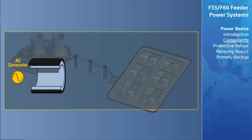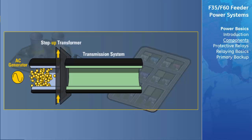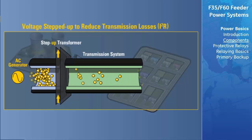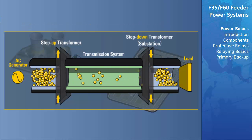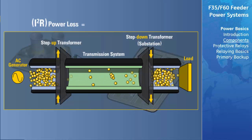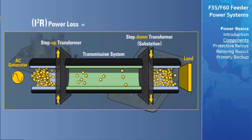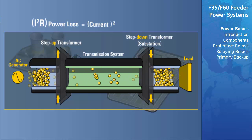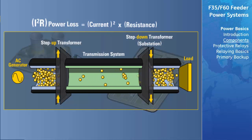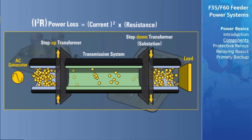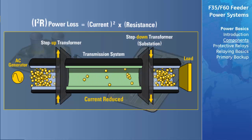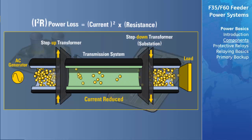Once generated, the voltage is fed to step-up transformers for transmission to reduce the I-squared R losses, and then at the substation it is stepped down for distribution. Given that power loss equals current squared times the resistance of the transmission line, the step-up transformer increases the voltage level, thereby reducing the current, resulting in an overall reduction of power loss during transmission.